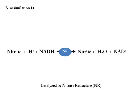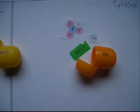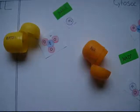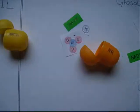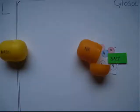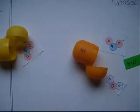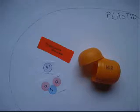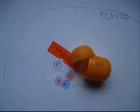When nitrate has entered the cell, it is assimilated in 4 steps into glutamine and glutamate. In the first step, this takes place in the cytosol: nitrate reductase assimilates nitrate into nitrite. Nitrite is toxic, so it is transferred into the plastid where it is turned into ammonia by the nitrite reductase.